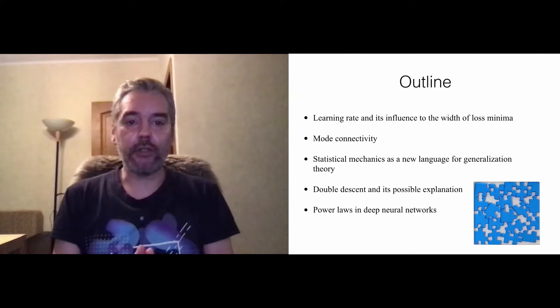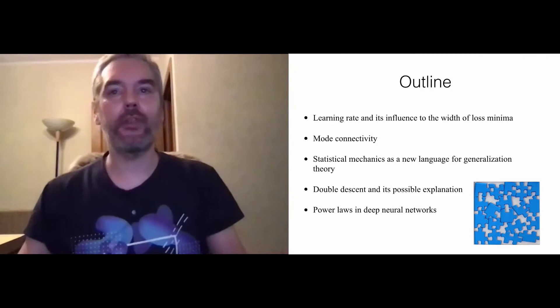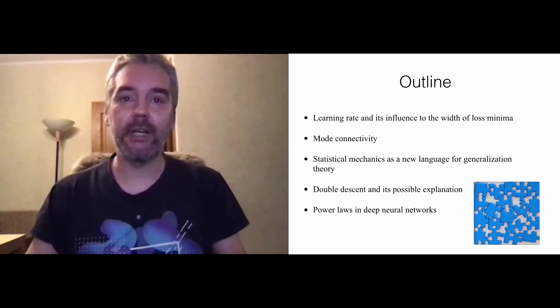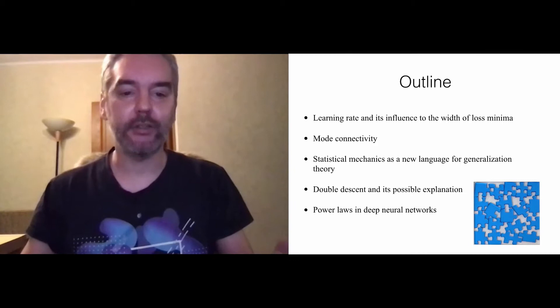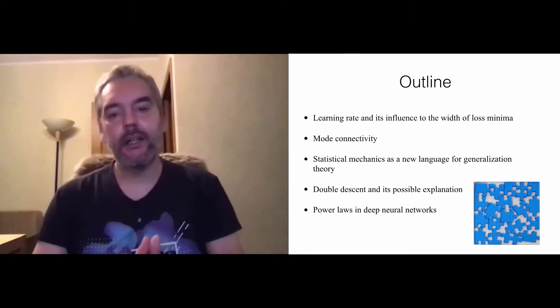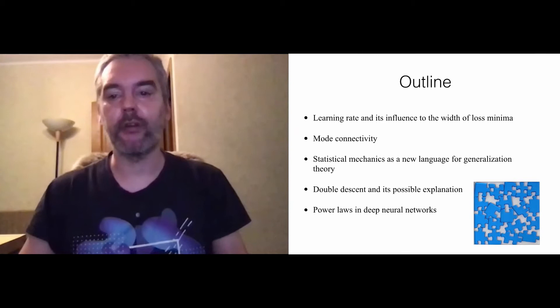The outline of today's talk: First, we'll discuss how learning rate influences the width of loss minima and generalization ability. Then we'll try to understand mode connectivity with the fractal hypothesis — that the loss landscape might have a fractal structure. We'll discuss double descent and its possible explanation. Finally, I will present one of my hypotheses about a possible new theory of generalization for deep learning, different from classical statistical learning theory.